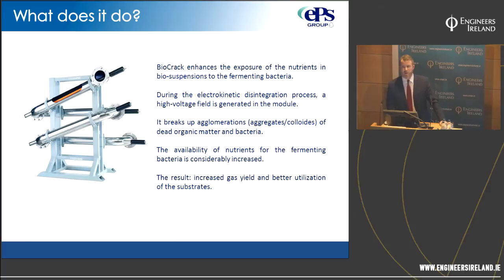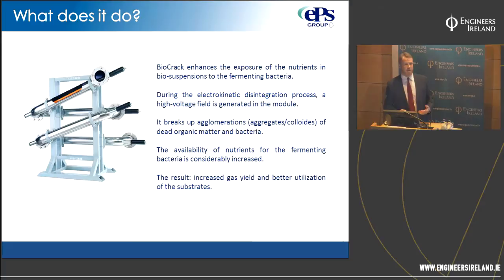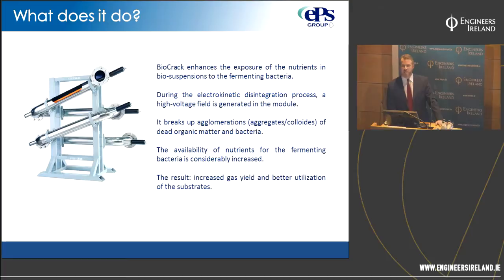Anaerobic digestion is not a new technology. The first digester goes back to 1859, built in a leper colony in India, and it was used in the early 1900s for street lighting in Devon. As we know it today, it developed in Germany in the 1930s. The problem with anaerobic digestion is it's a very time-consuming process — particularly the initial hydrolysis stage. This is mostly down to the low biodegradability of cell membrane walls and the presence of biopolymers in the sludge.